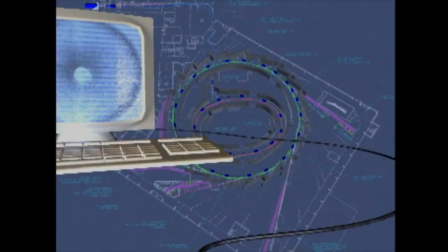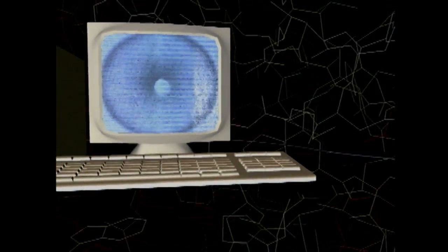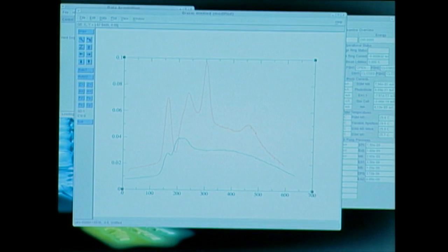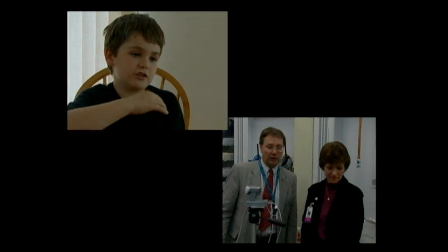All those x-rays go into individual hutches where a sample is placed, and they measure how the x-rays come off the sample. Then it goes on to a computer and it makes a thing called a spectrum that people like my mom and dad can read, and they know where atoms are in the molecules and what kind of atoms there are.